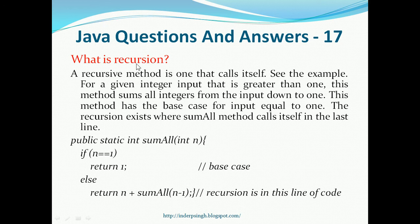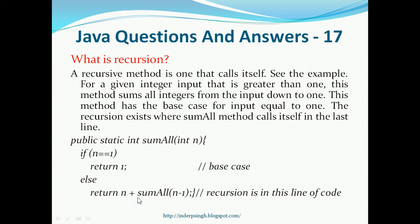Question 17. What is recursion? A recursive method is one that calls itself. Let us look at the example below. For a given integer input that is greater than 1, this method sums all the integers from the input down to 1. Let us say we give the input argument as 2, so it is going to add up all the numbers from 1 to 2, that is 1 plus 2 is 3. First, if the input is 2, it checks if 2 is equal to 1 — no, it goes to the else block. Return 2 plus sumAll(2 minus 1), which means the sumAll method calls itself with an input argument of 1. When the input argument is 1, it returns 1. So basically it returns 2 plus 1, that is 3.